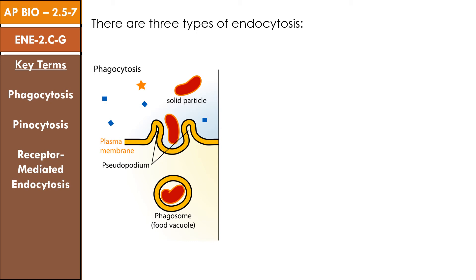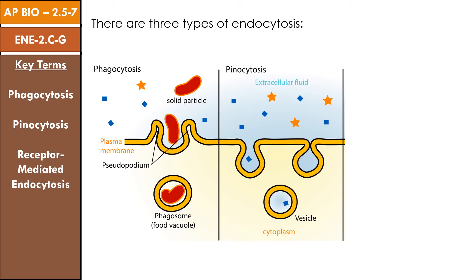Vesicles can also form via pinocytosis, known as cellular drinking. In this case, the vesicles bring fluids and dissolved substances, including proteins, into the cell. Pinocytosis is relatively nonspecific regarding what it brings into the cell. For example, pinocytosis goes on constantly in the endothelium — the single layer of cells that separates a blood capillary from the surrounding tissue — allowing those cells to rapidly acquire fluids and dissolved solids from the blood.